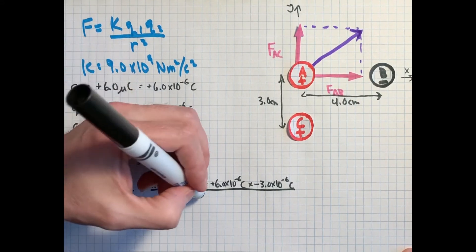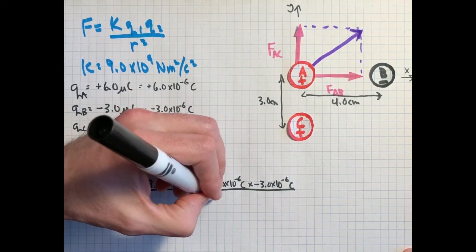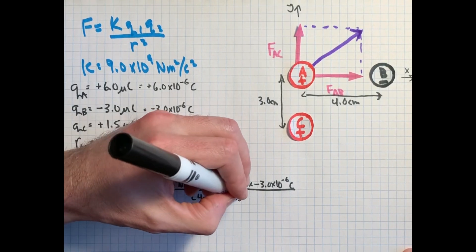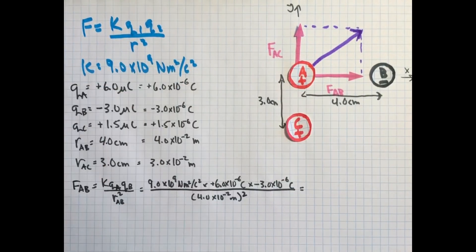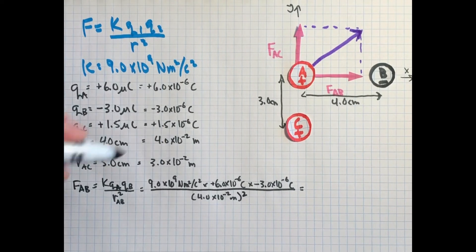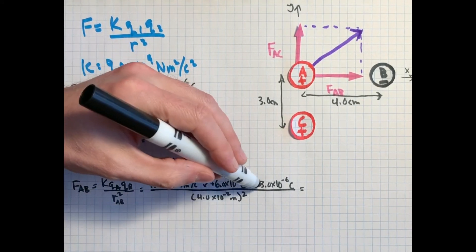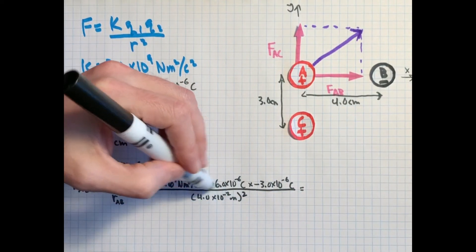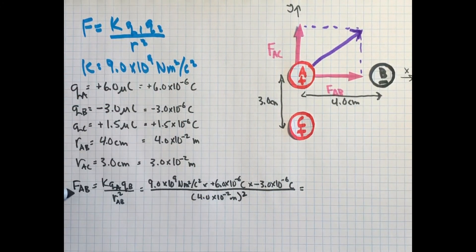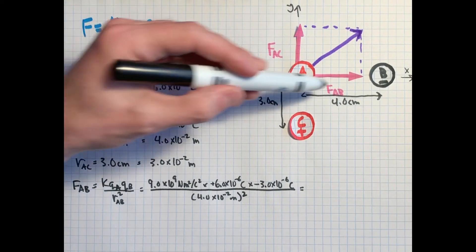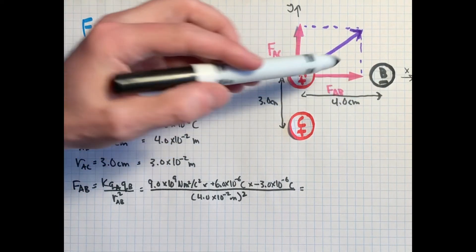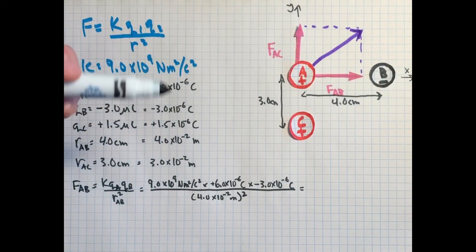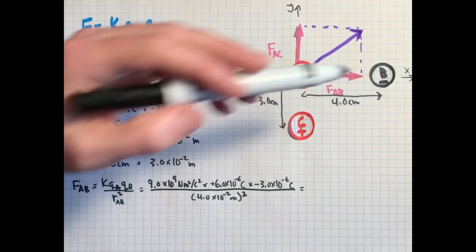So if we're going to use 9 times 10 to the 9 newton meters squared per coulombs squared, we must have coulombs and meters in our equation. So q1 was plus 6 times 10 to the minus 6 coulombs times B is minus 3 times 10 to the minus 6 coulombs, all divided by, in this case, we're only looking at the AB, 4.0 times 10 to the minus 2 meters, and we're going to square that whole thing. So note here that we have positive, positive, and a negative here, which means we're going to get a negative number on top divided by a positive number, which means our force in the end should be negative. And remember from the last example that when you get a negative force, it means that it's attractive, meaning that A is going to go towards B.